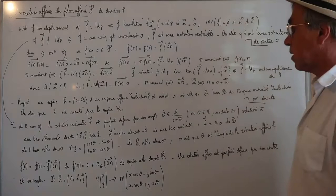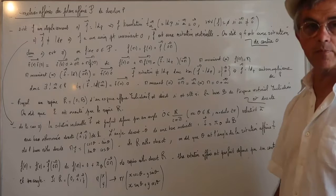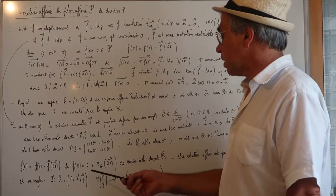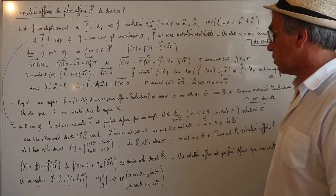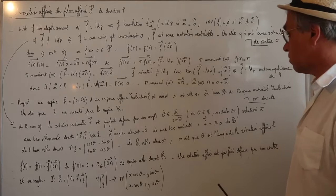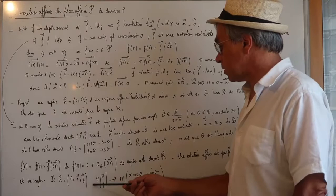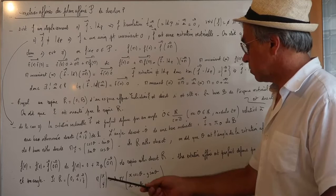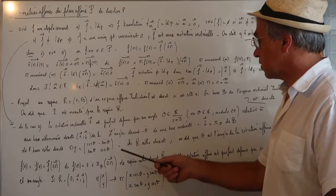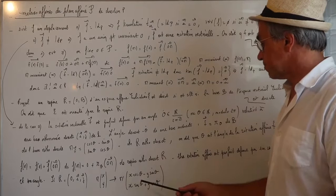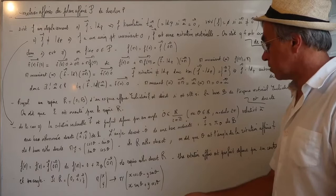On a F(M) = F(O) + Φ(OM). Ici F(O) = O, donc F(M) = O + R_θ(OM). Donc F est parfaitement défini par son centre O et par l'angle θ. Dans un repère orthonormé direct, l'image d'un point M de coordonnées (x, y) est donnée par la multiplication par la matrice de rotation appliquée au vecteur OM = (x - x₀, y - y₀), ce qui donne les coordonnées de M'.